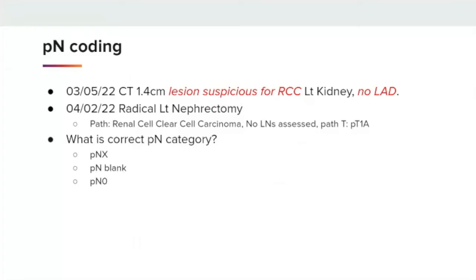For PN coding, we have the following example. On March 5th, a CT showed a 1.4 centimeter lesion suspicious for renal cell carcinoma of the left kidney, no lymphadenopathy. The patient then proceeded to have a radical left nephrectomy. The pathology report showed renal cell clear cell carcinoma; no lymph nodes were assessed. The path report described pT1A. Given the patient did not have any lymph nodes assessed during surgery, you cannot apply a PN0. You would assign PNX.